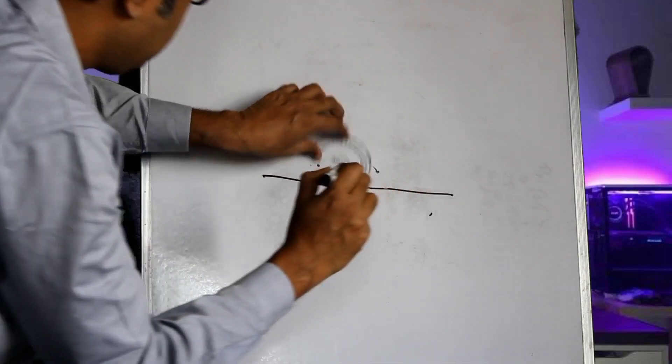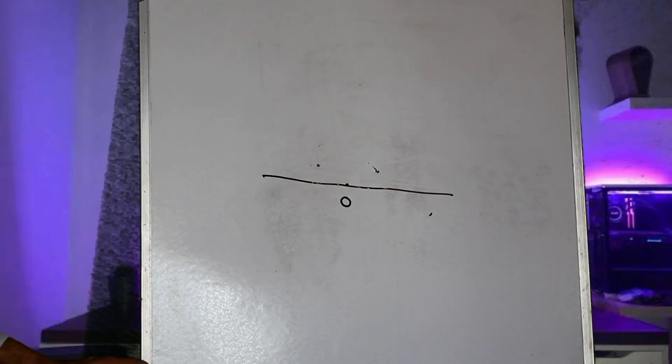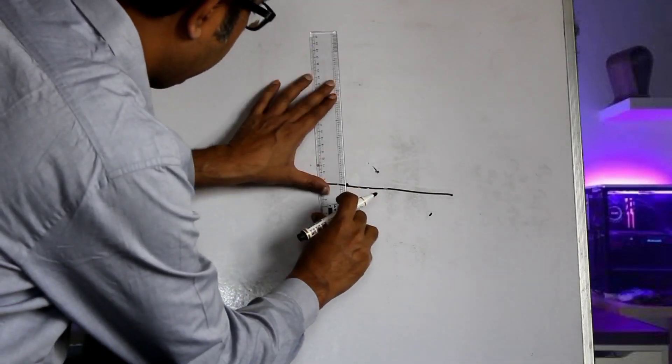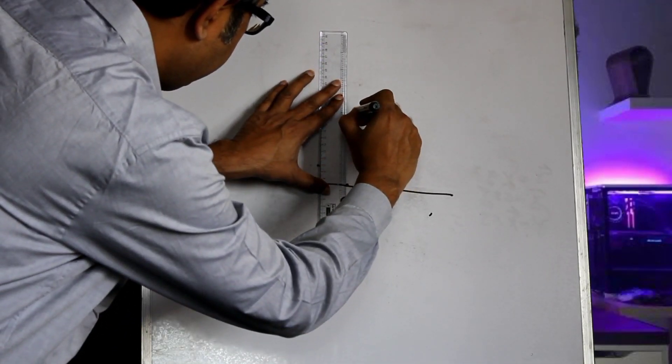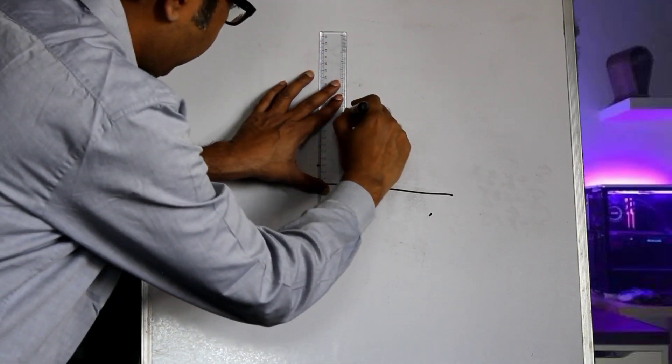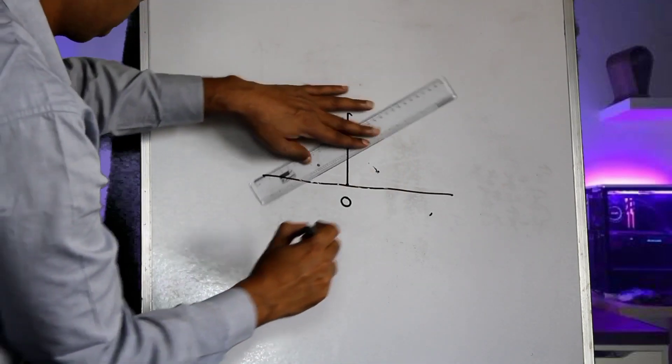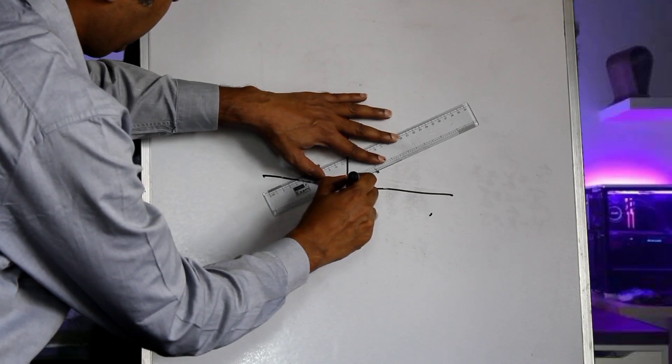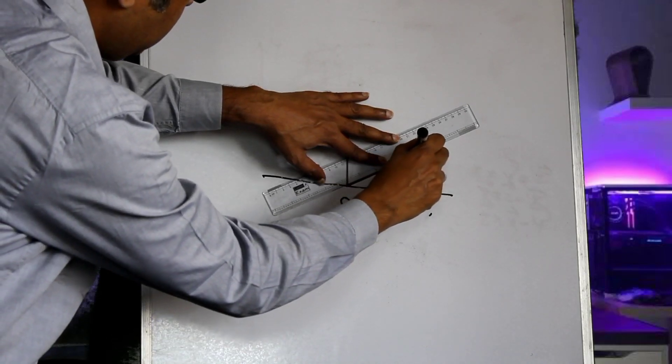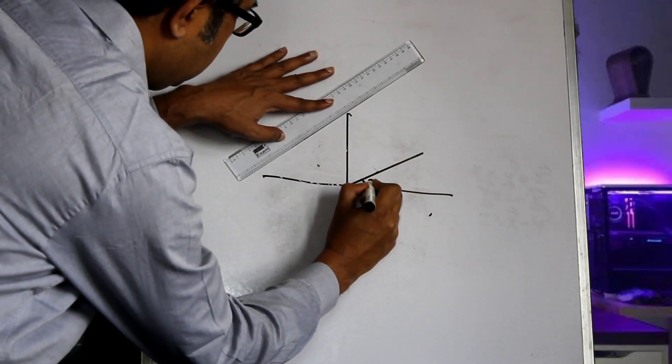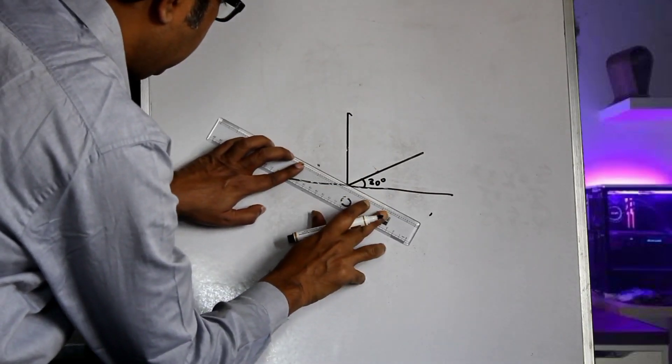And we draw a line vertically in this direction and this 30-degree line and this 30-degree line.